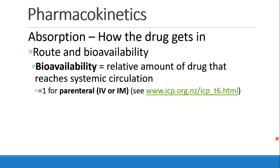Let's start with absorption — how does the drug get into the body? There are many different routes of administration that we can use. One important term is bioavailability: the relative amount of drug that you gave which actually reaches the systemic circulation. For example, you may take a pill with 1,000 milligrams of Tylenol, but how much actually gets into the bloodstream? If I give the drug IV, the bioavailability is always 1, or 100%, because all of the drug goes straight into the bloodstream. That's true for any parenteral dosing — meaning it doesn't go through the GI tract, so typically IV or intramuscular.